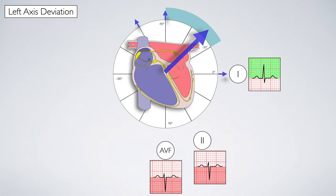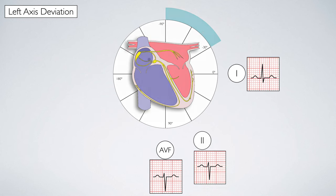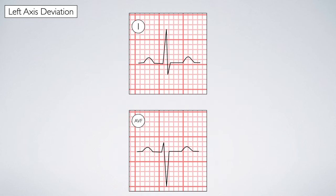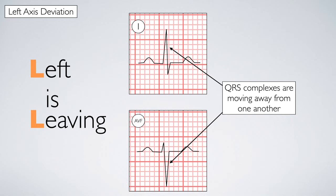If this explanation is making you feel puzzled, do not worry. Just remember the following: left is leaving, meaning that the QRS complexes in lead one and AVF are moving away from one another, drifting apart.